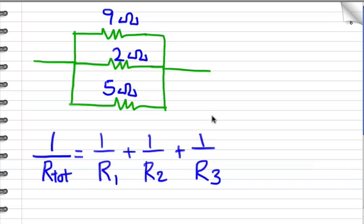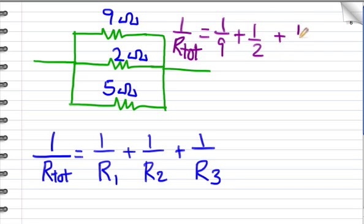Now, finally, I want to go over the formula for multiple resistors in parallel. The formula says 1 divided by the total resistance equals 1 over R1 plus 1 over R2 plus 1 over R3 plus however many resistors you have. So, for example, in this case, 1 over R total would equal 1 ninth plus 1 half plus 1 fifth. Now, you could simplify this by getting a common denominator, but I'll just do it the easy way and use my calculator.